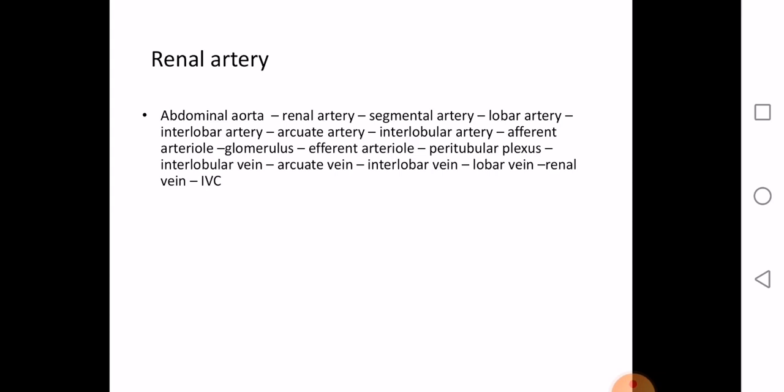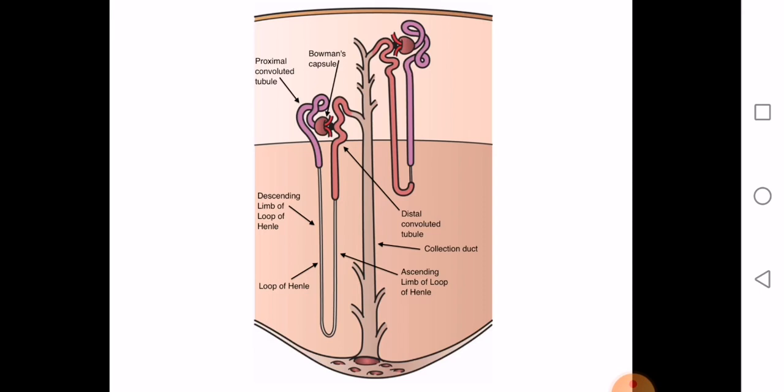Exposure of the kidney from behind: you draw what is called the Morris parallelogram. You must know how to draw it. The landmarks are the vertebral column at T11, L1, and L3. You draw two horizontal and two vertical lines. The first horizontal line is at the level of the spine of T11. The second is at the level of the spine of L3.